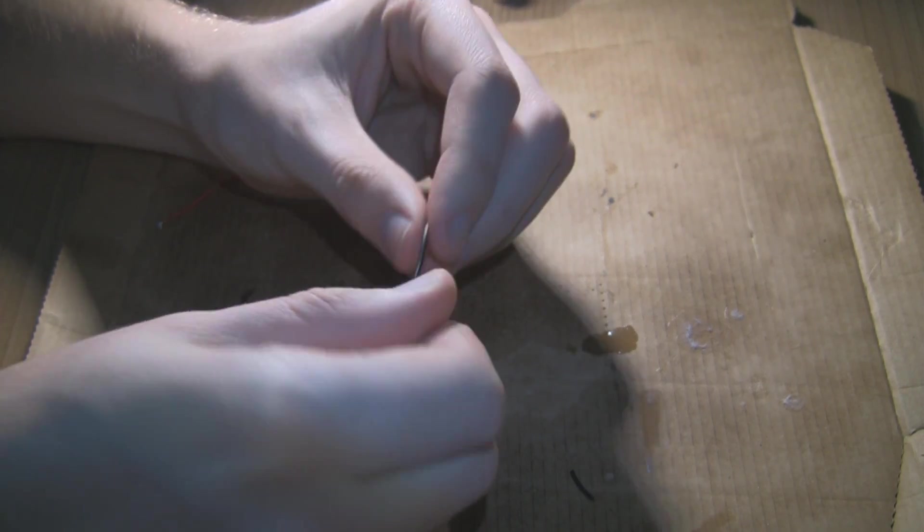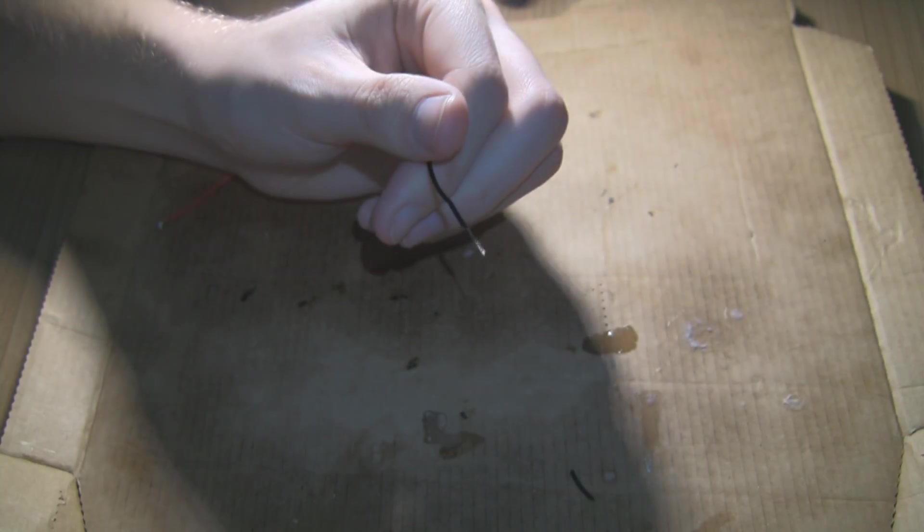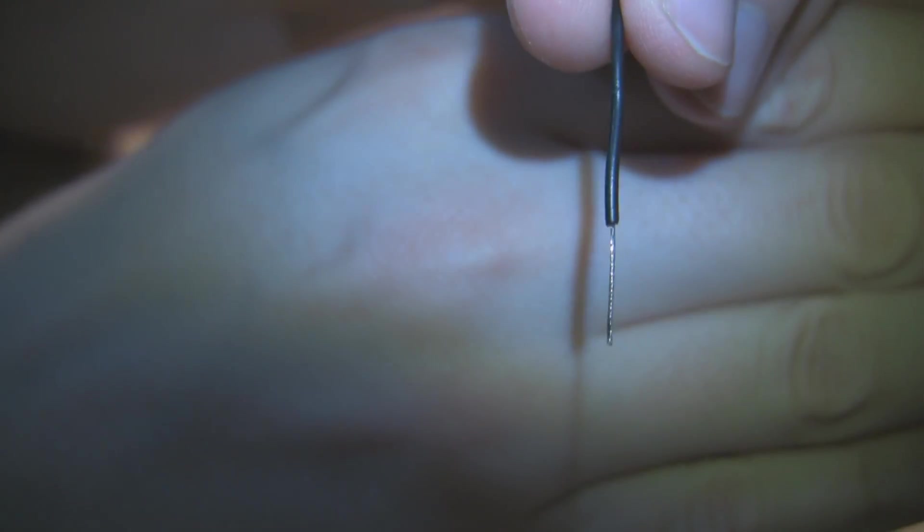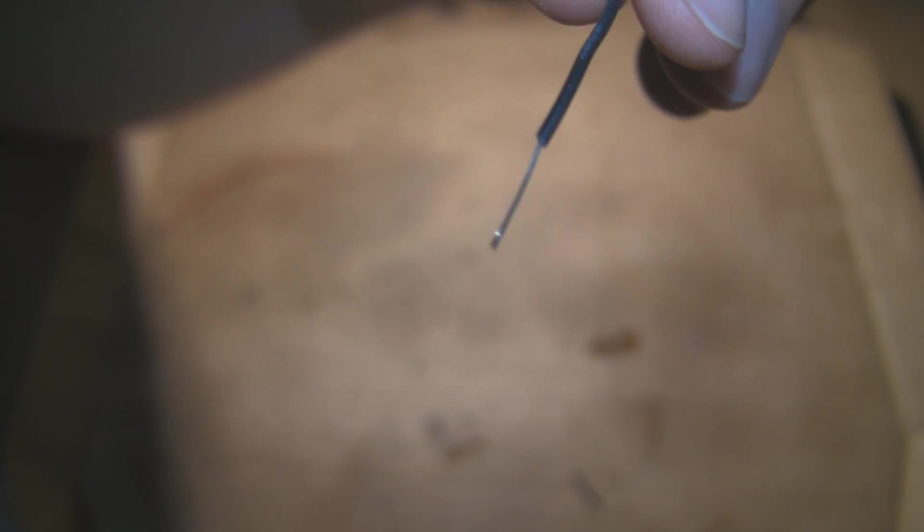First, you want to take just any normal wire and strip it down. Next, we want to twist it up nice and tight so it's all perfect and together.